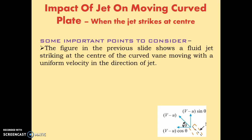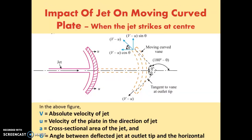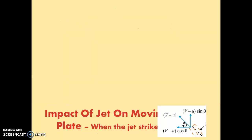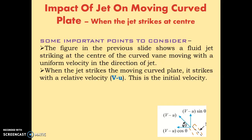The figure shows the fluid jet striking at the center of the curved vane or curved plate, moving with uniform velocity in the direction of the jet. When the jet strikes the moving curved plate, it strikes with a relative velocity v minus u — this is the initial velocity, same as in the moving inclined plate and the moving flat plate cases.